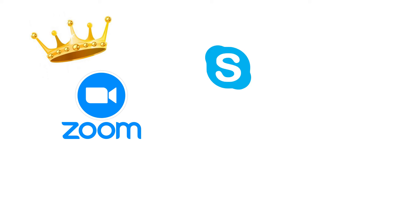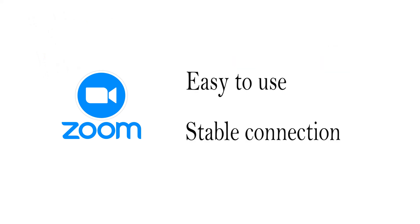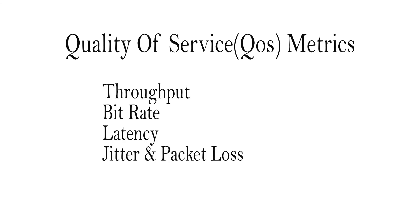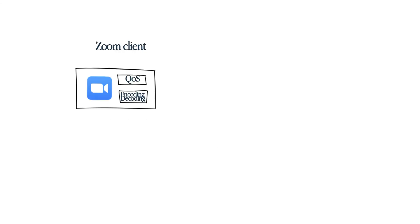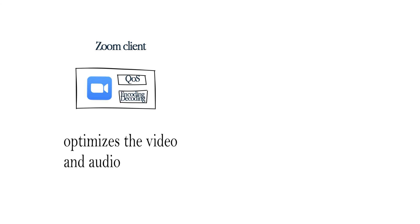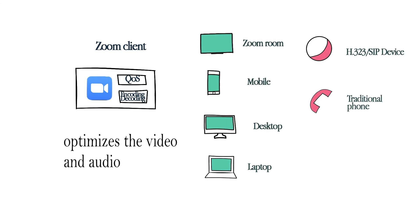What makes Zoom outperform competitors such as Skype and other video conference software by Cisco, Google, or Facebook? The major reason is ease of use and stable connection. QoS is a measurement of the quality of a computer network. Zoom implements QoS in the application layer at the client side, and the client software optimizes video and audio for a particular type of device, ensuring the performance of the communication.